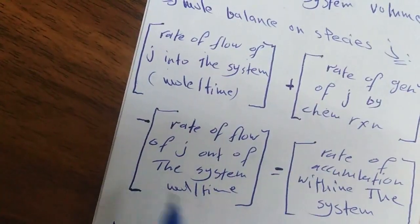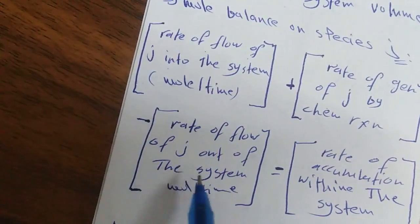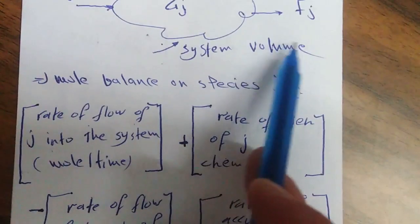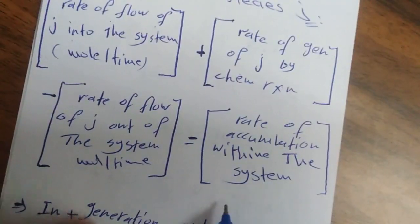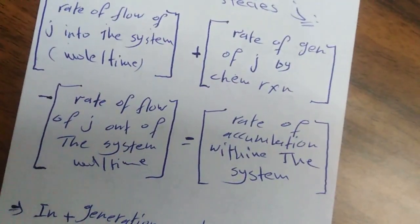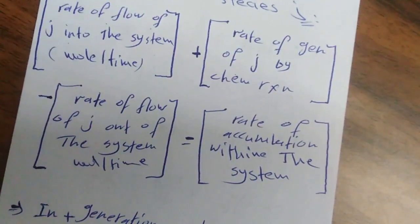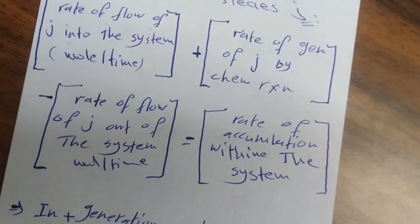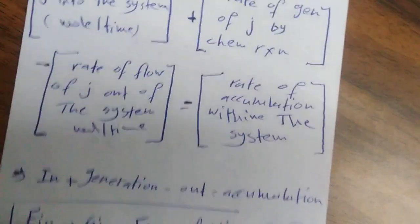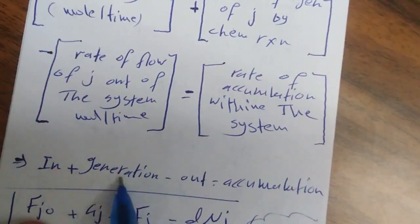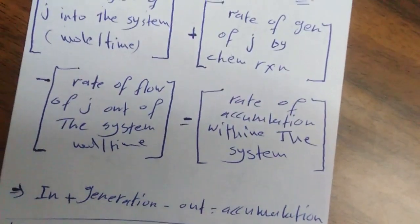plus Rate of Generation of Species J by chemical reaction، لأنه في عندنا Reaction، إذن أكيد في عندنا Generation، اللي هي G of J، minus Rate of Flow of Species J out of the System، اللي هي F of J، تساوي Rate of Accumulation of Species J within the System. يعني بالكلمات: in plus generation minus out يساوي Accumulation.